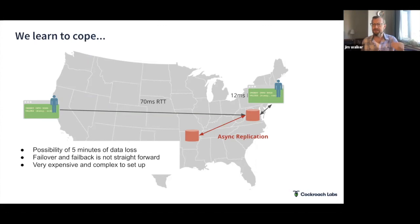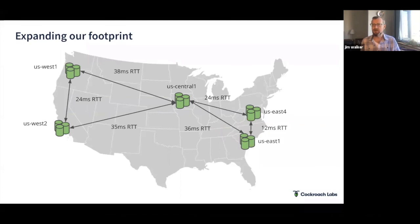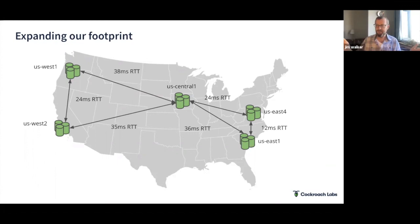CockroachDB is different. We write data in triplicate and can spread it across the entire country — US West 1, US West 2, US Central, US East — shrinking latency hops while having true backup systems. Because every node is active, this is active-active — I don't need a separate active-passive system. Every node can survive the loss of another. We still understand you need point-in-time recovery and backup/restore. Backup and restore in a distributed system is a different equation — when you backup the database, that backup needs to be distributed as well and tied to the right location.